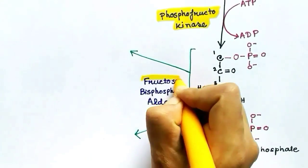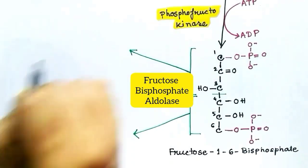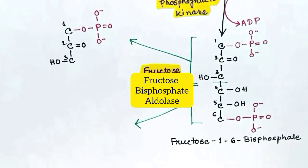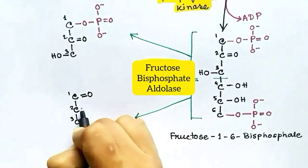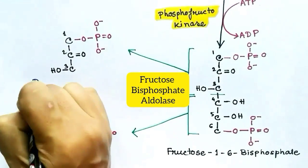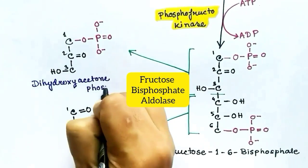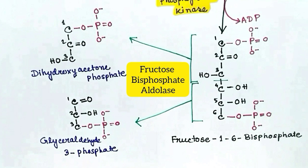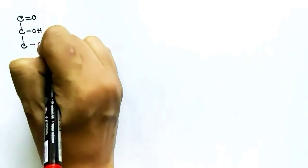In the next step, the six-carbon molecule fructose-1,6-bisphosphate is broken down into two three-carbon molecules: dihydroxyacetone phosphate (DHAP) and glyceraldehyde-3-phosphate (G3P). These two molecules are interconvertible. The DHAP later converts into glyceraldehyde-3-phosphate, which continues further in the glycolysis pathway.